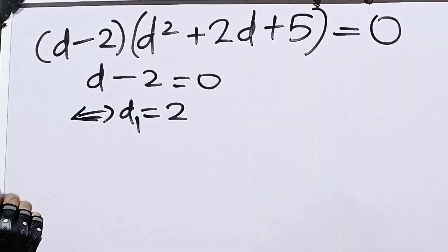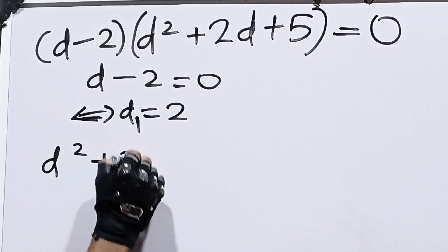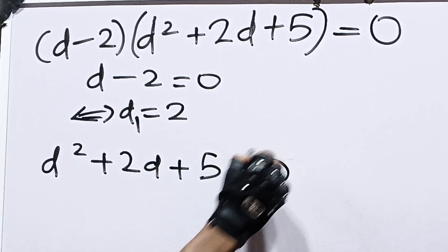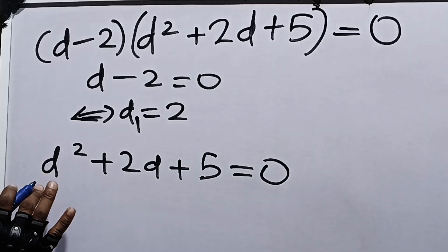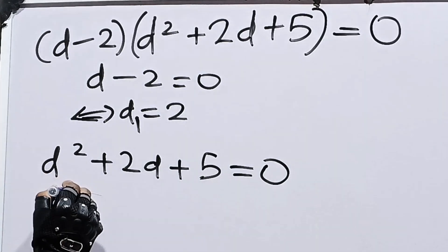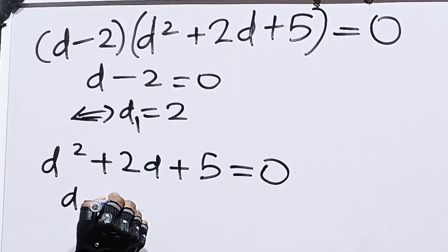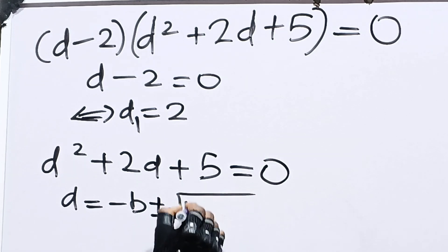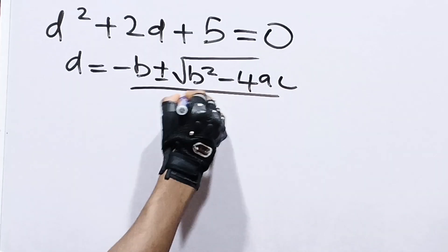Now let's find the second and third answers. We set d squared plus 2d plus 5 equal to 0 and use the quadratic formula to solve this. The quadratic formula states that d equals negative b plus or minus the square root of b squared minus 4ac, all over 2a.